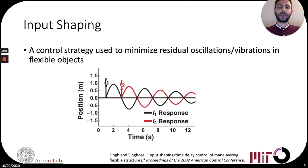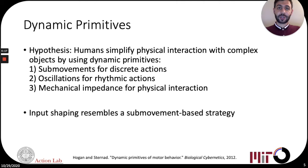One control strategy that has been developed in the engineering literature to control objects with flexible dynamics is input shaping, which relies on a sequence of impulses that excite and then cancel transient oscillations in the internal dynamics of the objects.